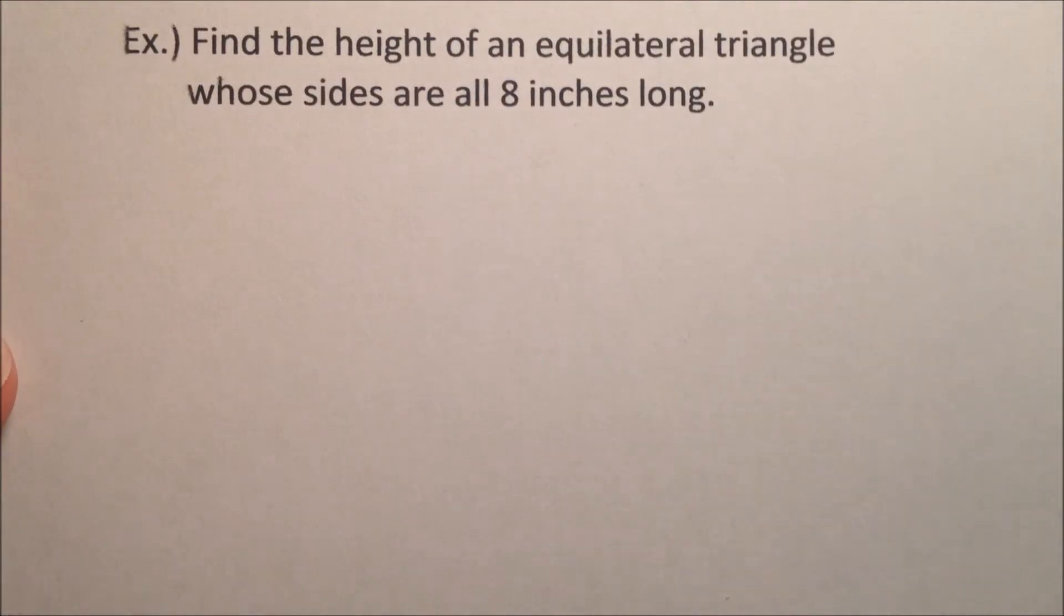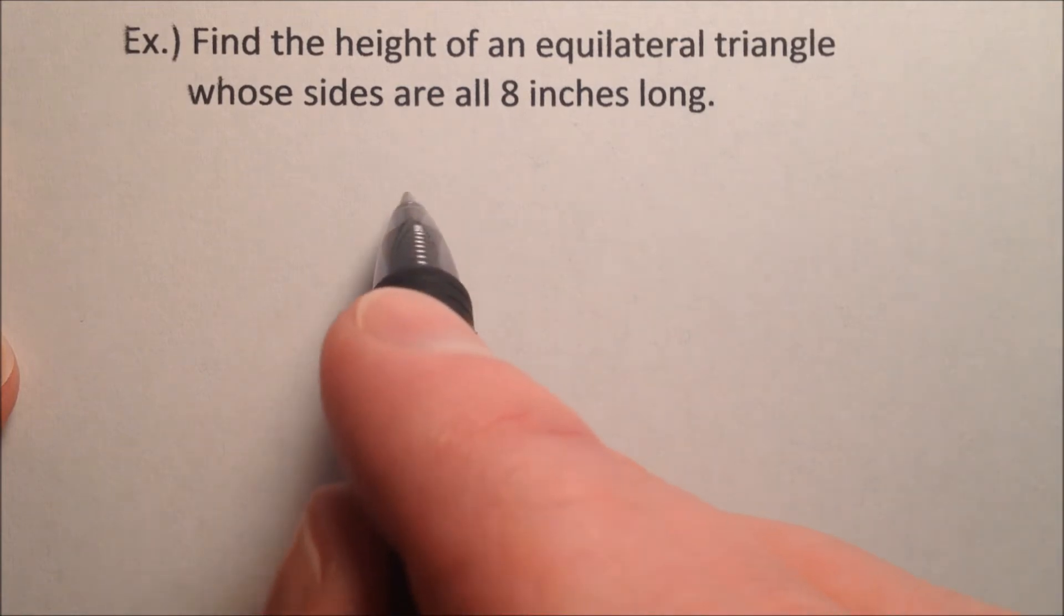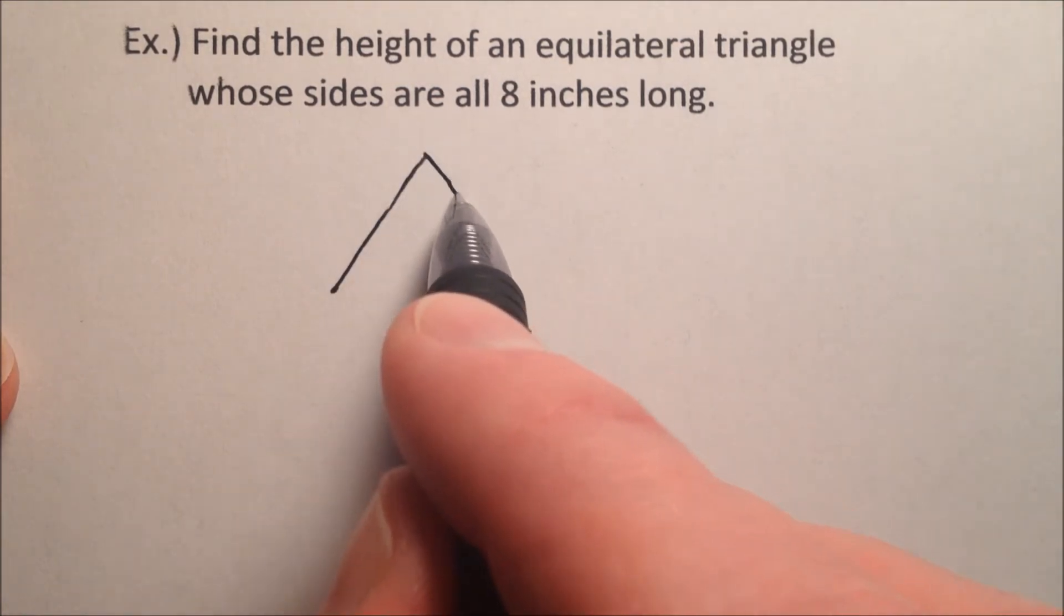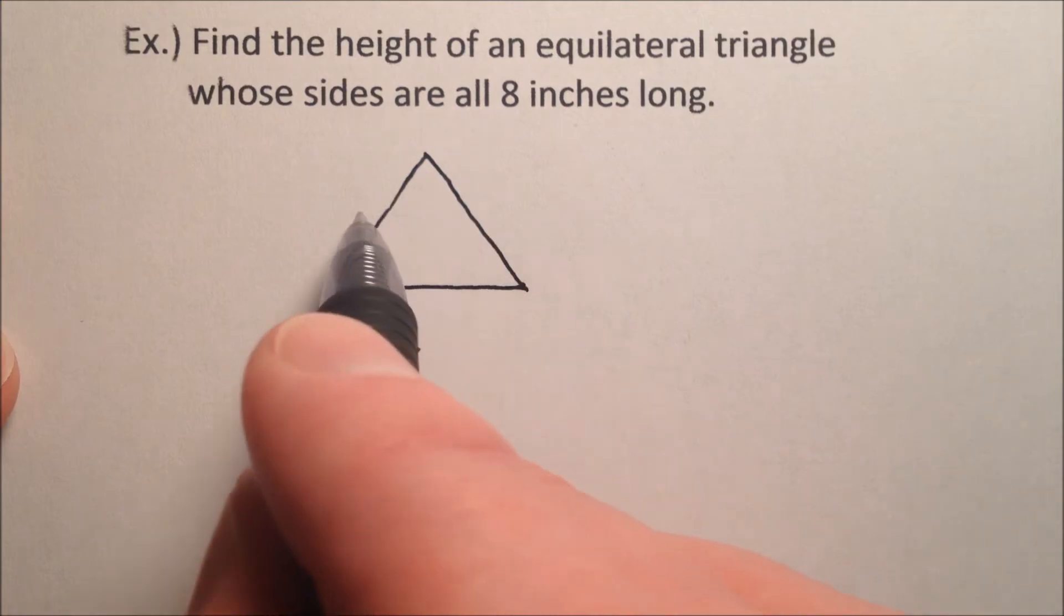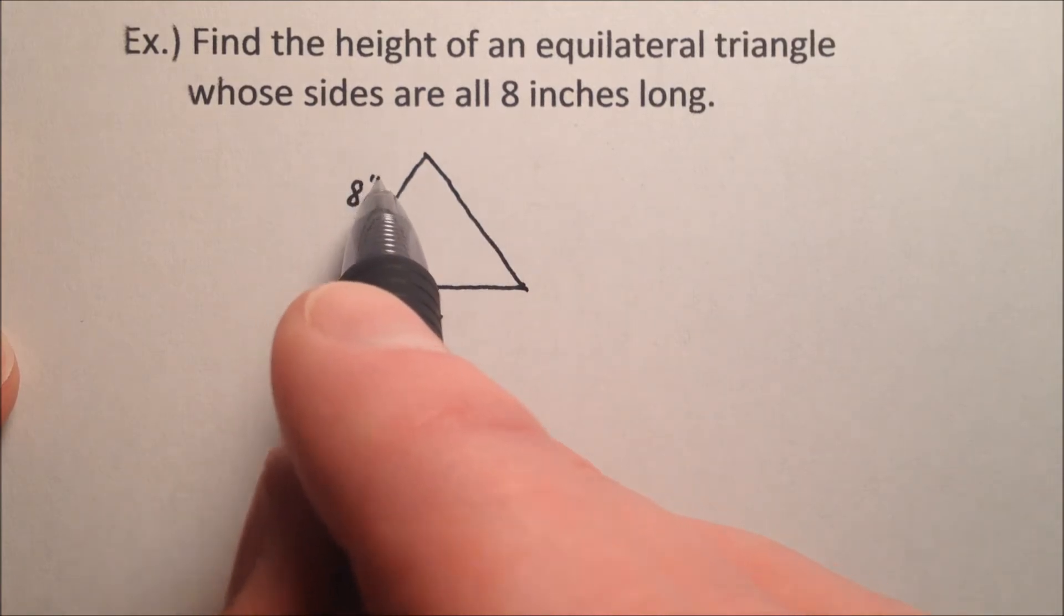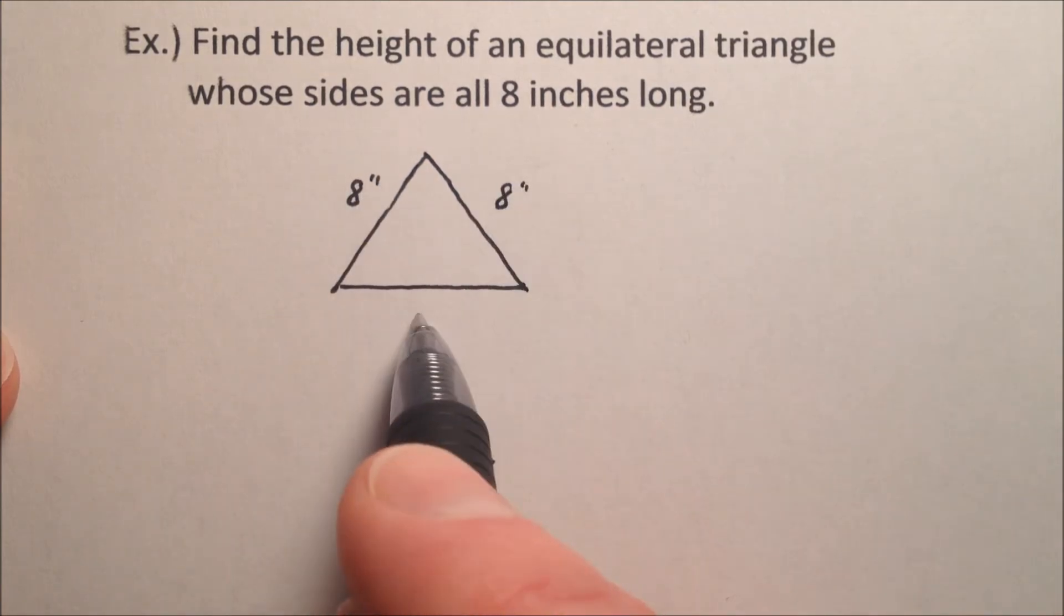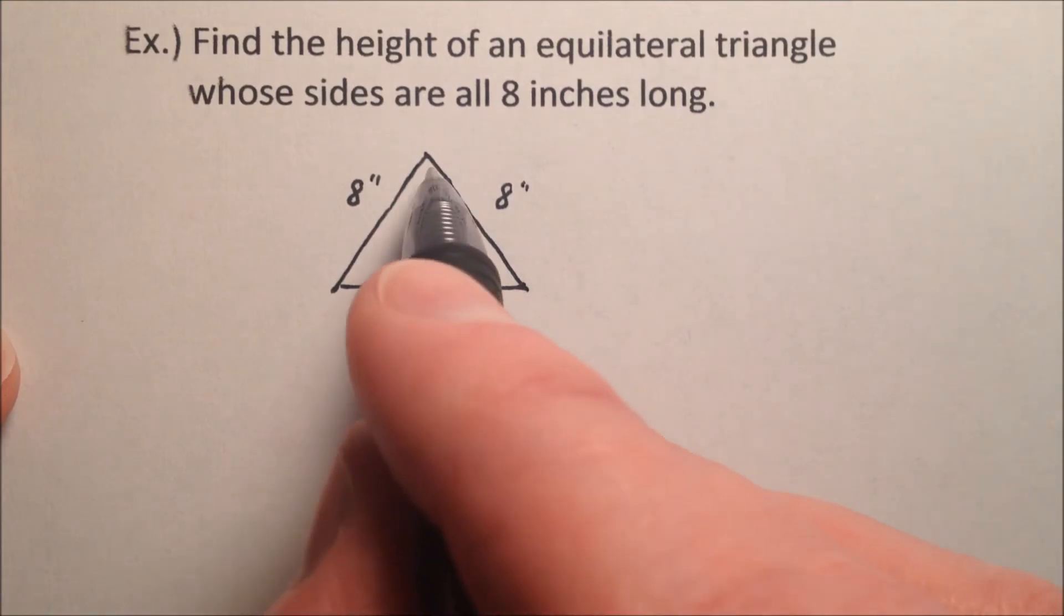Our final example says, find the height of an equilateral triangle whose sides are all 8 inches long. Okay? So we've got an equilateral triangle here. I'm going to say this guy is 8 inches, 8 inches, 8 inches. And we want to find the height.